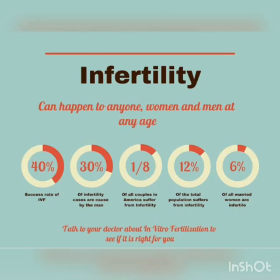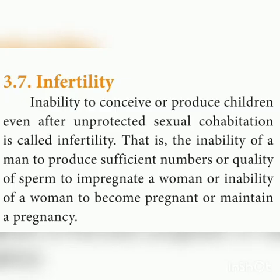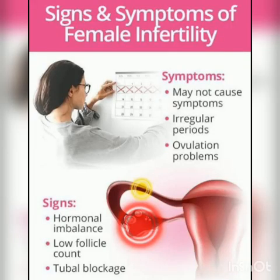Today we will discuss infertility and ART, that is Assisted Reproductive Technology. Infertility means inability to conceive, or inability to produce children even after unprotected sexual behavior. That is, the inability of a man to produce sufficient numbers or quality of sperms to impregnate a woman, or the inability of a woman to become pregnant or maintain a pregnancy.